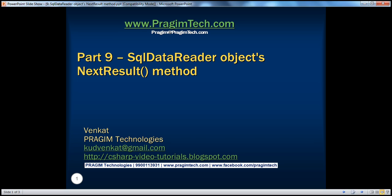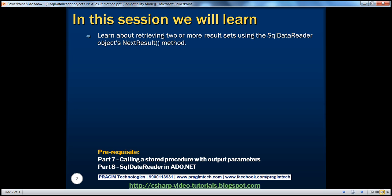Welcome to Prajame Technologies. I am Venkat. This is part 9 of the ADO.NET video series. In this session, we'll learn about retrieving two or more result sets using the SQL Data Reader object's NextResult method. Before continuing, I strongly recommend watching parts 7 and 8 of this video series. There are no more slides in this session — it's going to be completely demo-driven. So let's flip to Visual Studio.